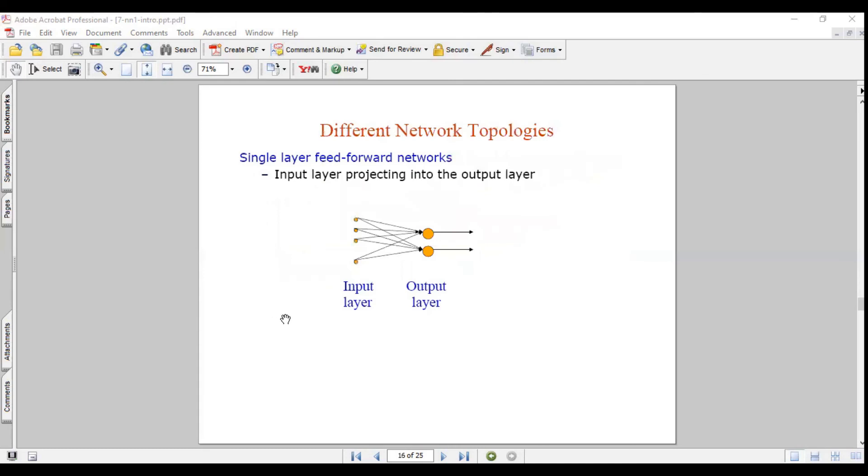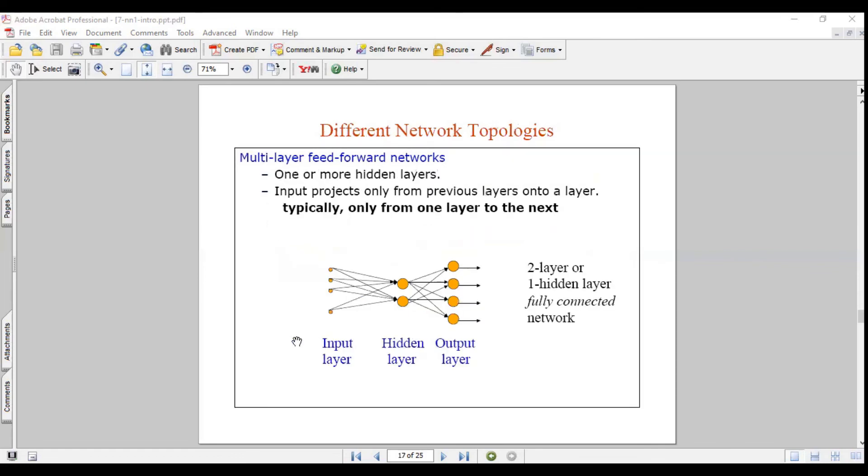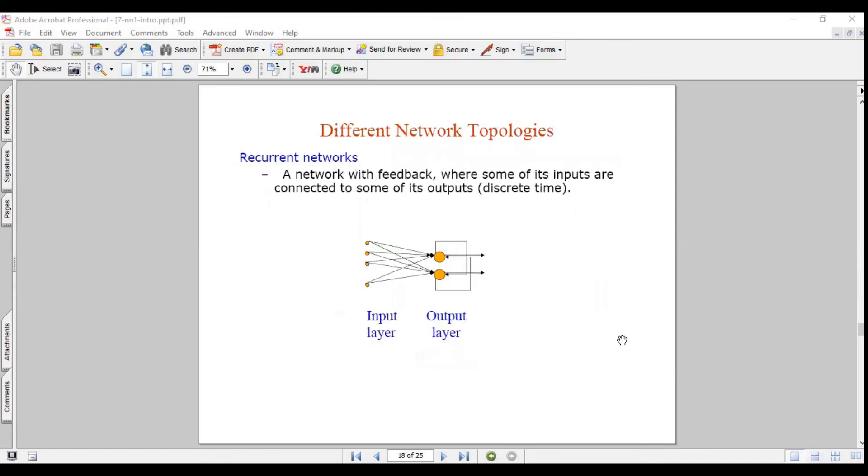The topology is important. Single layer feed-forward network: input layer is projecting into the output layer. Input layer and output layer is one of the network topologies we are using in ANNs. Another type of topology has input layer, output layer, where a hidden layer exists between these two layers. One or more hidden layers, where input projects only from previous layers onto the next layer, typically only from one layer to the next.